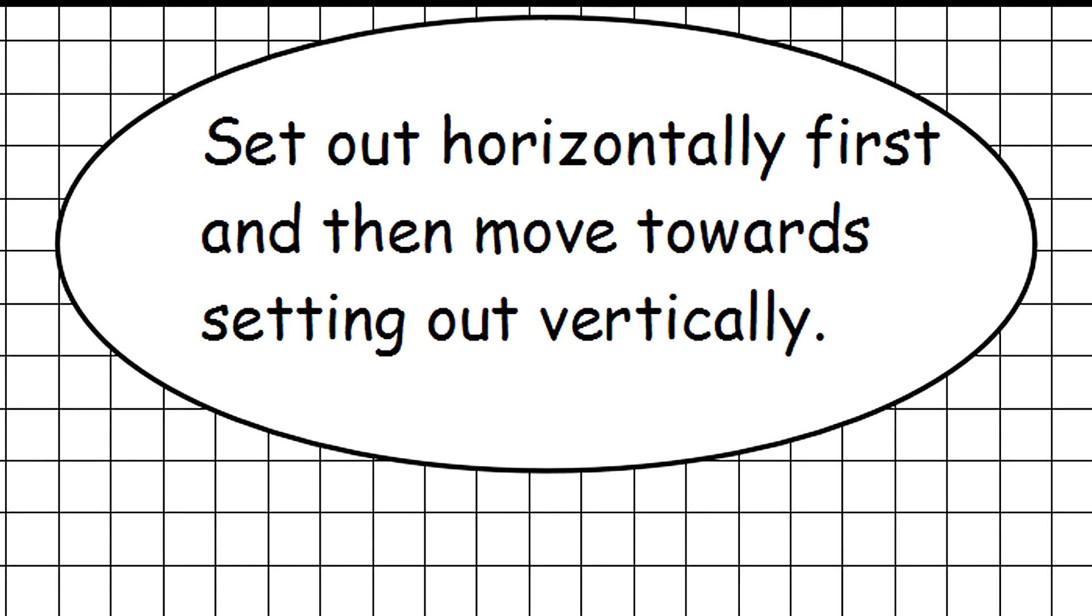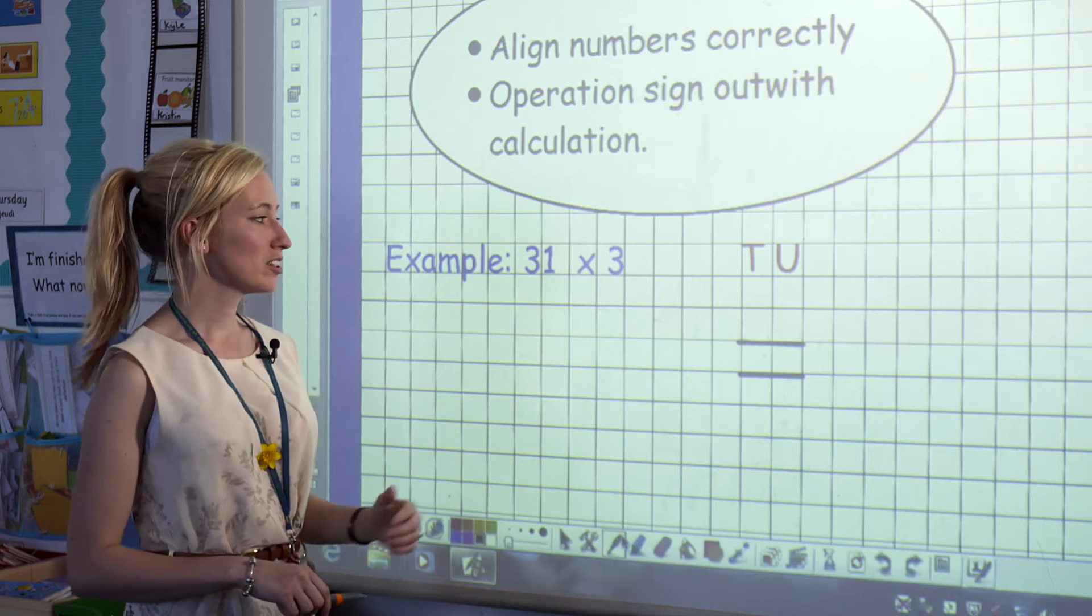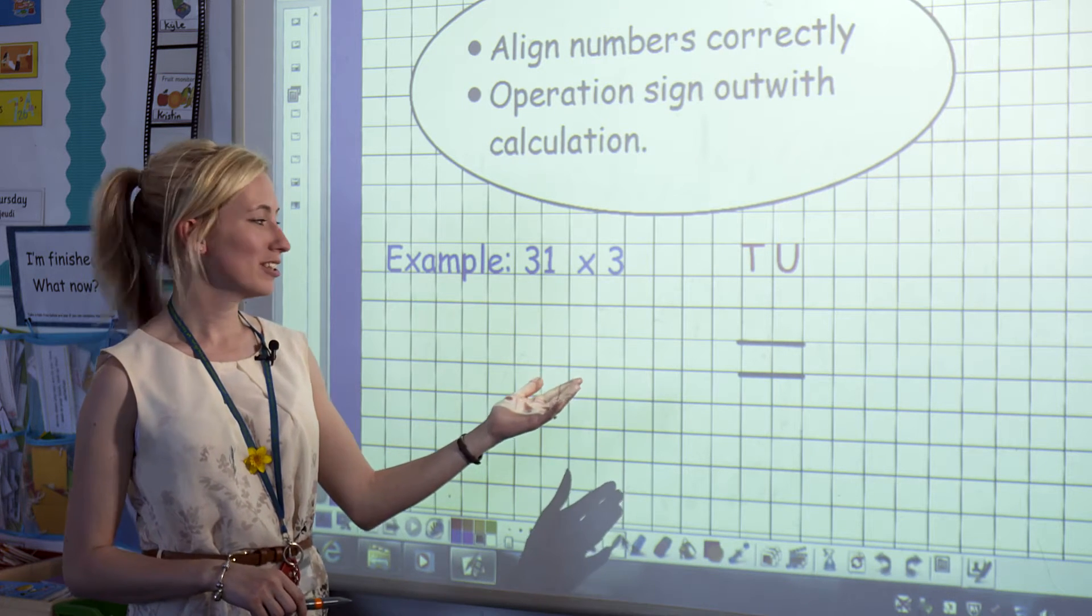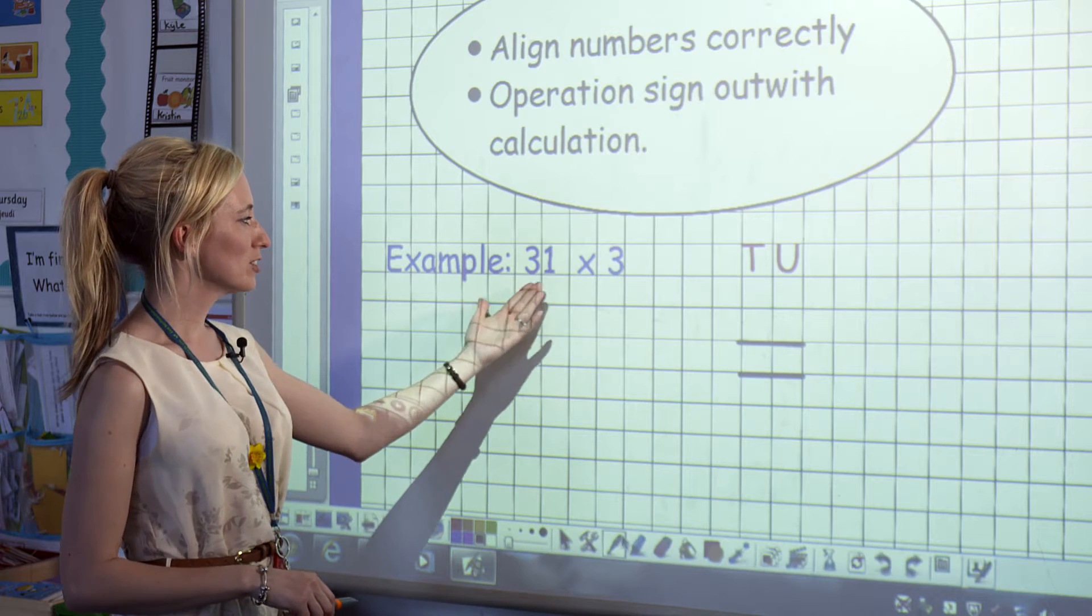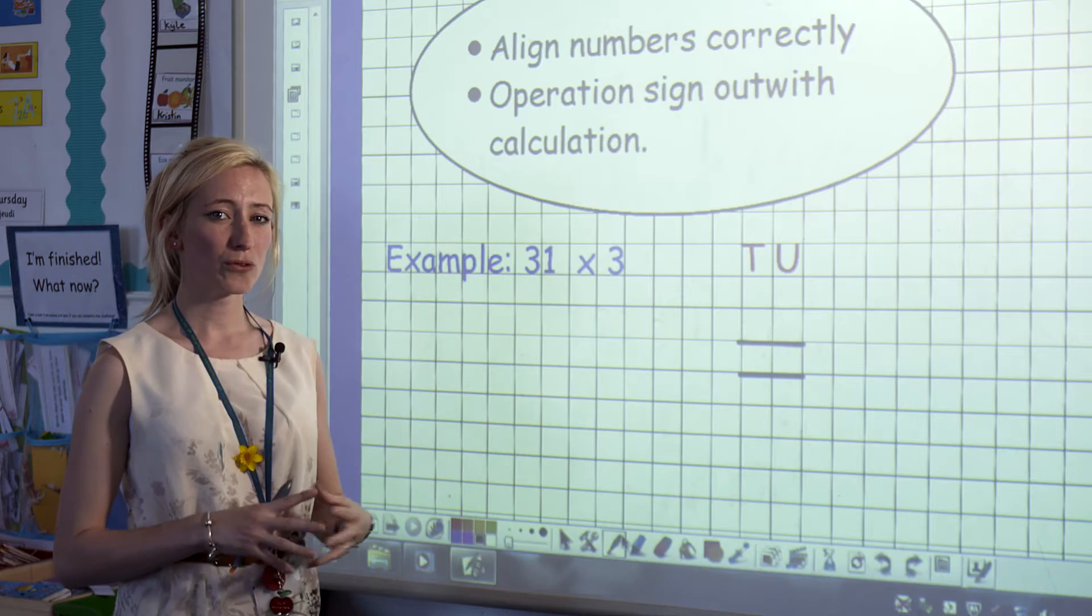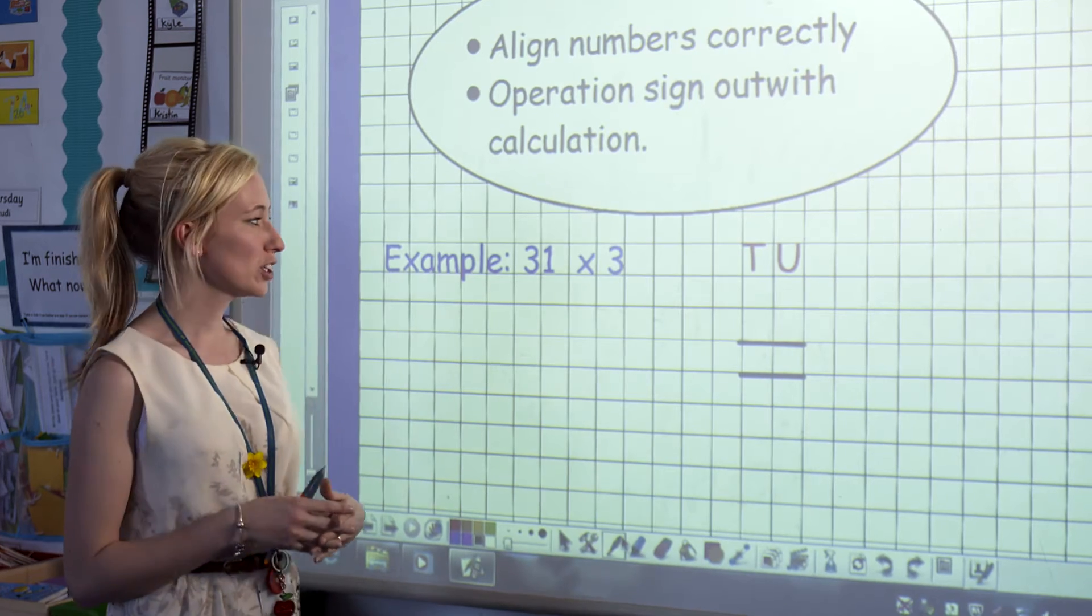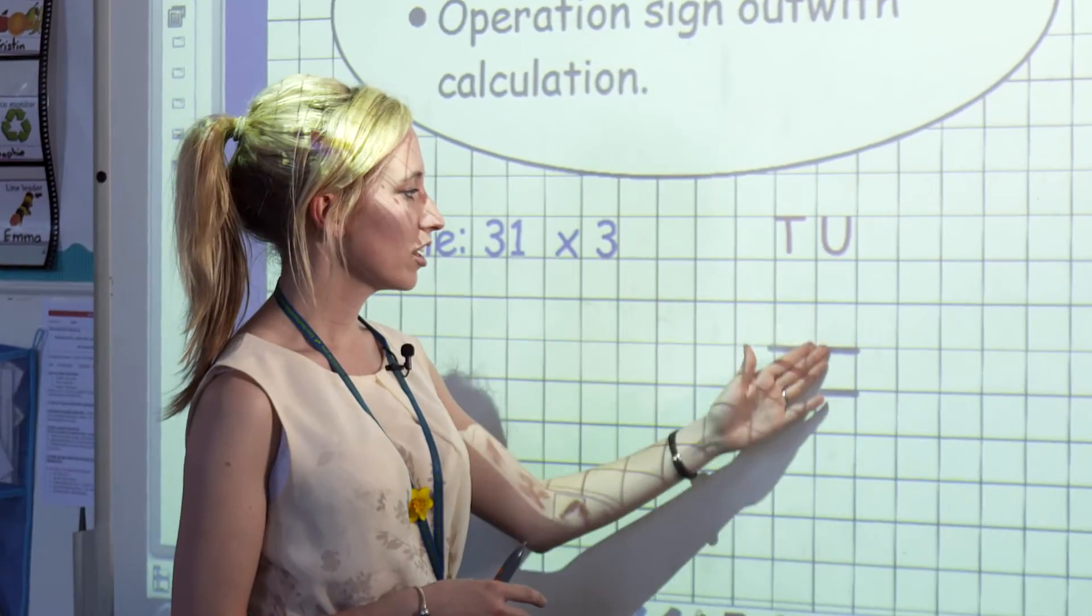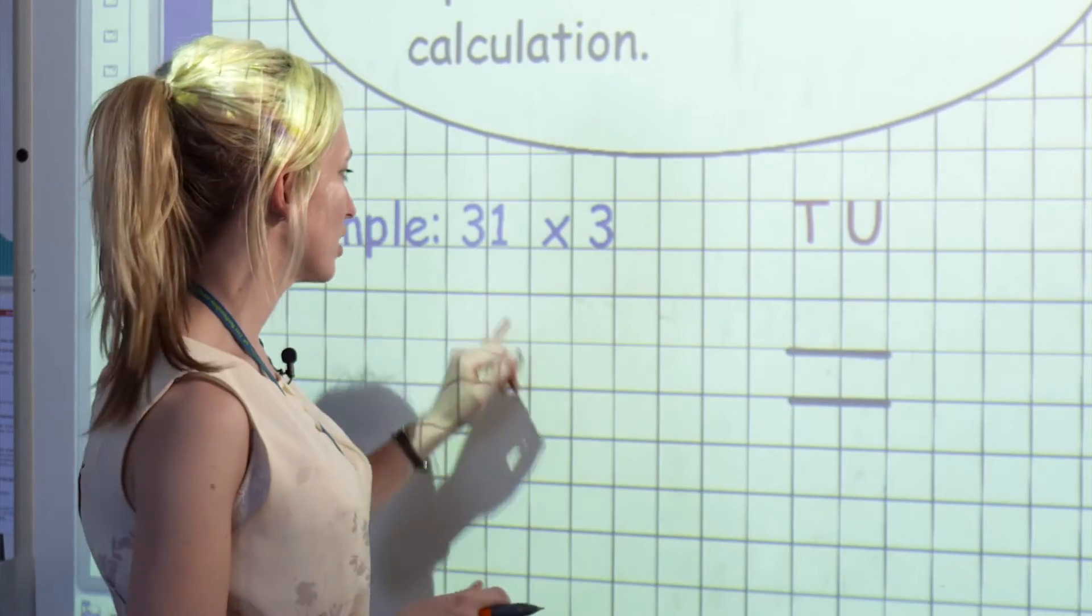If you come across a multiplication calculation with two digits where it's laid out horizontally, it can be very difficult for children to work this out mentally, so we try and encourage them to put it into a vertical calculation. For this example, we have 31 multiplied by 3. We refer back to the children's previous knowledge from their addition and subtraction calculations.